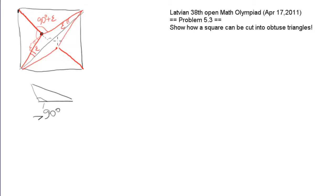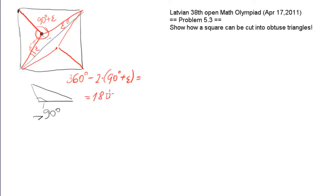Since all three angles here add up to 360 degrees, the third remaining angle is 360 minus 2 times (90 plus epsilon), which equals 180 minus 2 epsilon. If epsilon is small enough, this is also bigger than 90 degrees, and we have three obtuse triangles. On the other side of the diagonal we also have three obtuse triangles.